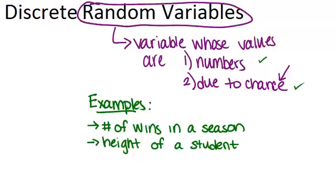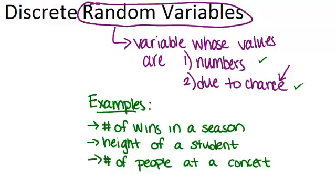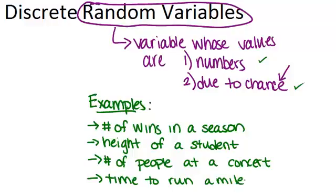A third example would be the number of people who are at a concert. The number of people at a concert will change from concert to concert and the number of people is due to chance. Finally, another example would be the time it takes to run a mile. These are just some examples of random variables and of course there are many more that we could think of.